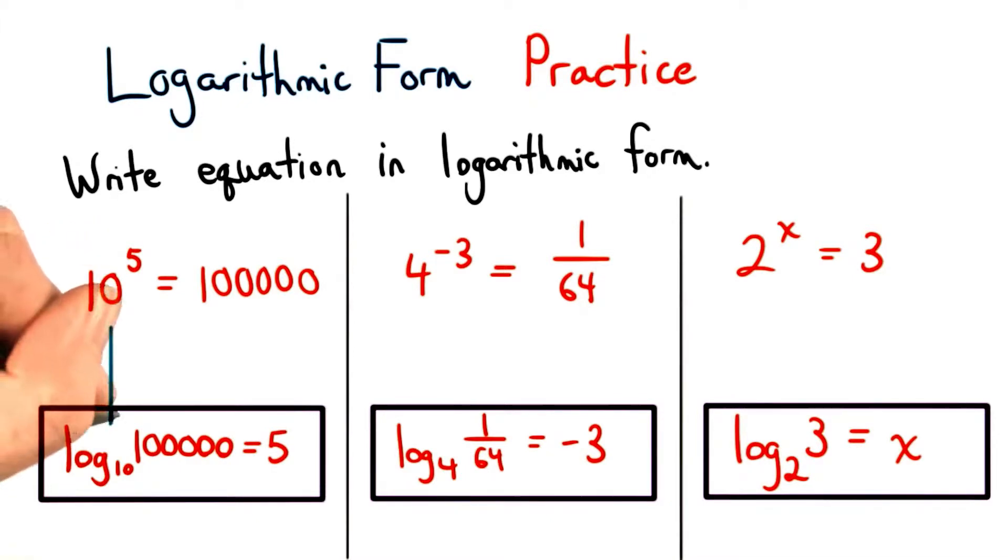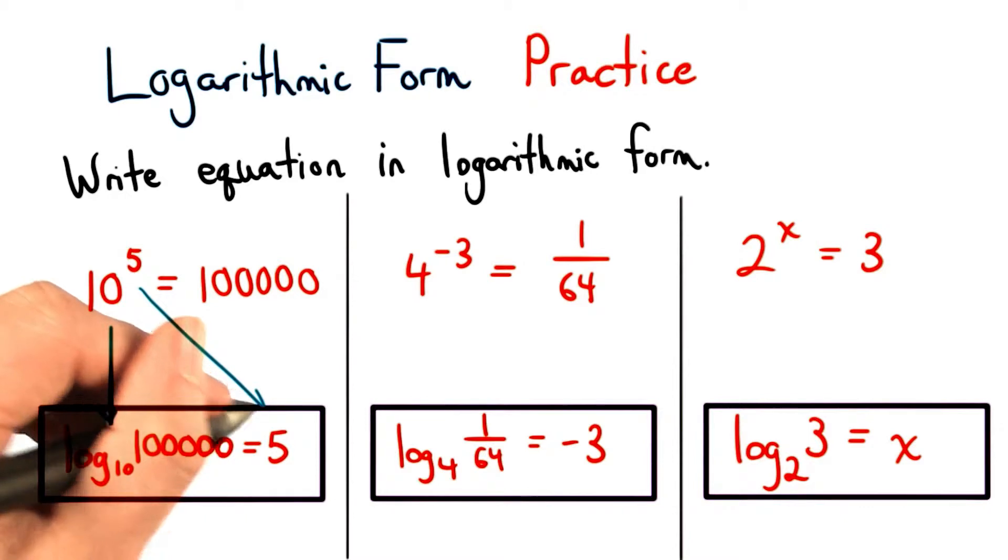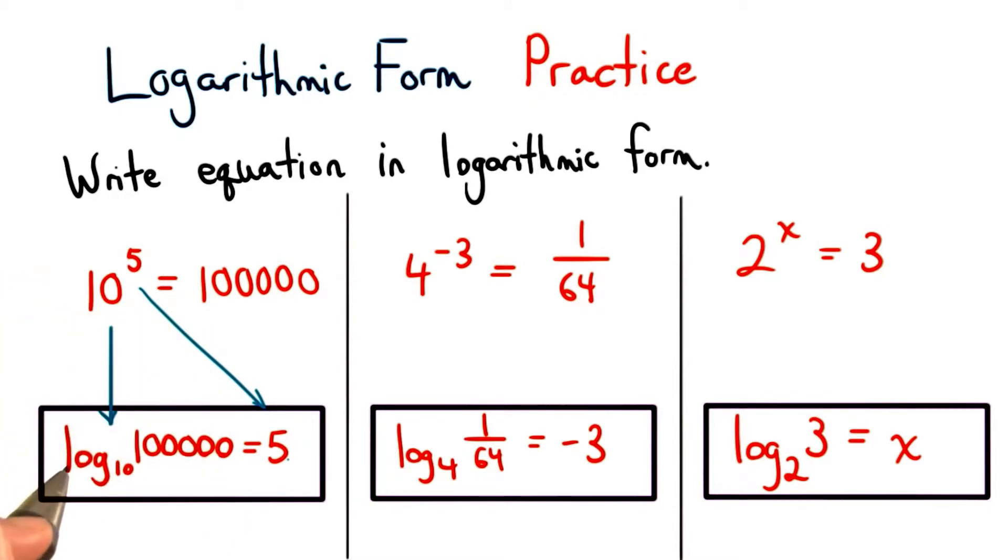Let's walk through each of them. For the first one, we'll have our base be 10, and we'll have our answer be 5. When we take the log with base 10 of some number, we'll get 5. It means that this number must be 100,000. The log base 10 of 100,000 equals 5. It's the power that we raise 10 to in order to get 100,000.